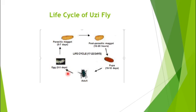This picture shows the infestation of Uzi fly on the silkworm larvae. The place of entry of the maggot into the silkworm larvae develops a black scar. This maggot feeds for around 5 to 7 days inside the body of the larvae as a parasitic maggot. After that, it comes out of the body by creating an opening and spends a post-parasitic life of 12 to 15 days. They pupate in cracks and crevices and the adult emerges after 10 to 12 days.